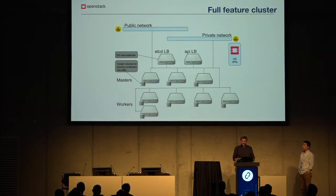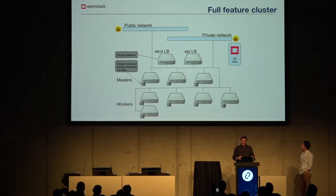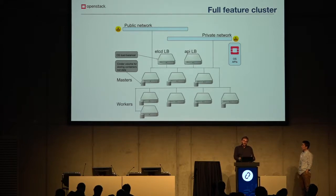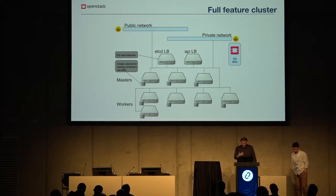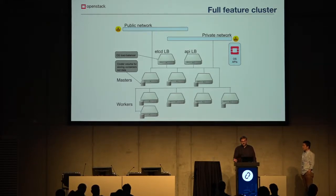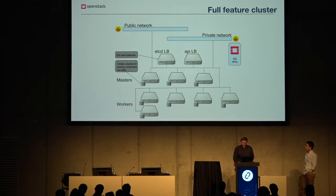The full feature set of a cluster also includes a public network where all nodes get floating IPs and a private network for inter-node communication. It has load balancers for etcd in the case of Kubernetes, or for the API in Docker Swarm or Mesos — just an Octavia or Neutron load balancer in front. For extra storage, since VMs get very small disks and container images can be large, we attach a volume to each node to extend storage available for Docker or other container runtimes.